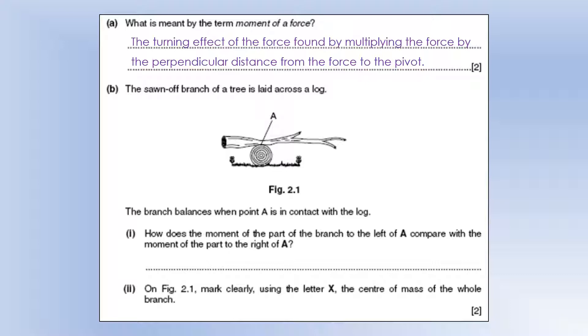A sawn-off branch of a tree is laid across a log. The branch balances when point A is in contact with the log. How does the moment of the part of the branch to the left of A compare with the moment of the part to the right? Well, if it's balanced, the moments must be equal. The clockwise moment must equal the anti-clockwise moment, otherwise it's not going to be in equilibrium like it says it is.